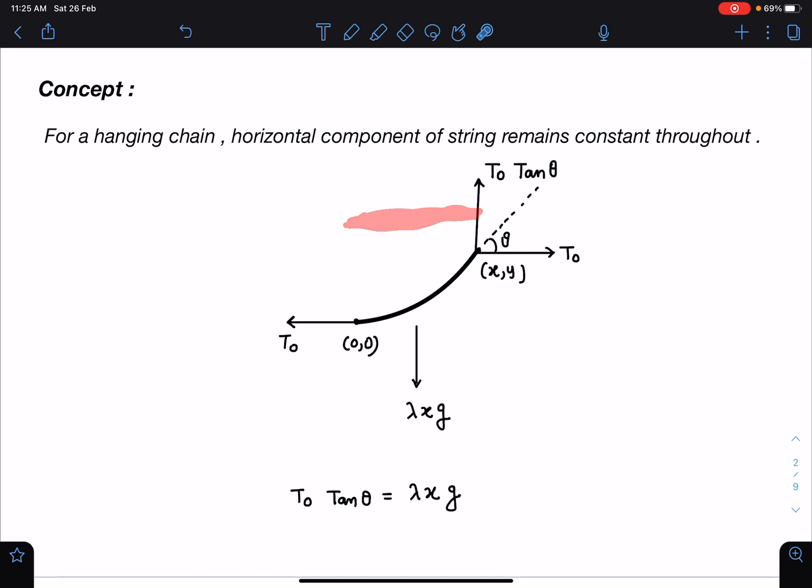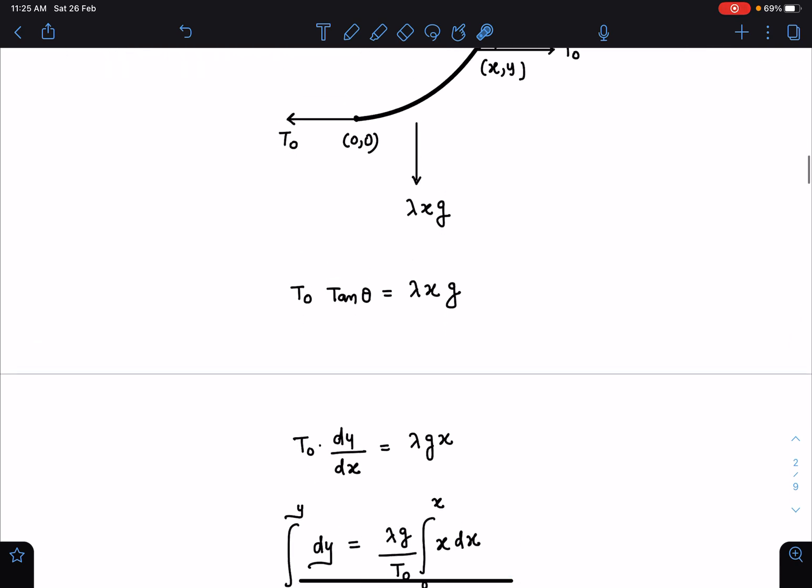Under this assumption, when the chain is really relaxed, it's λ₀, so λ₀ into X will be the mass of this element. However, its λ has changed, so new λ dash into length equals λ into X₀. So I'm taking the previous X₀ itself, so λxg. Now tan θ I can write as dy/dx.